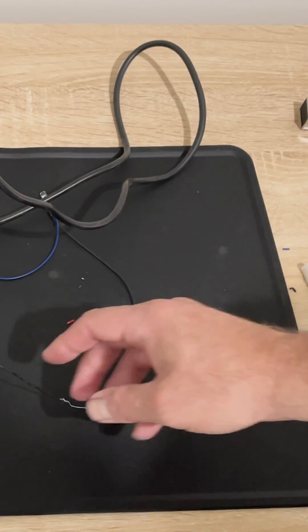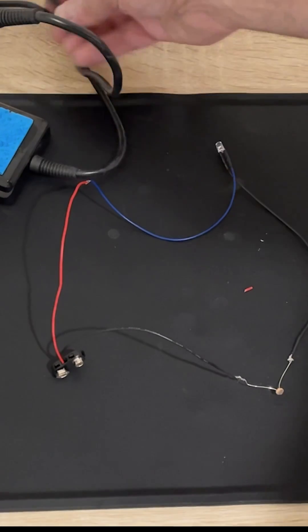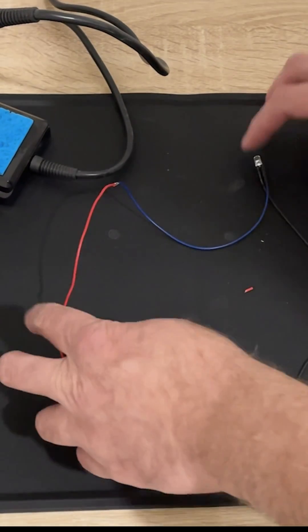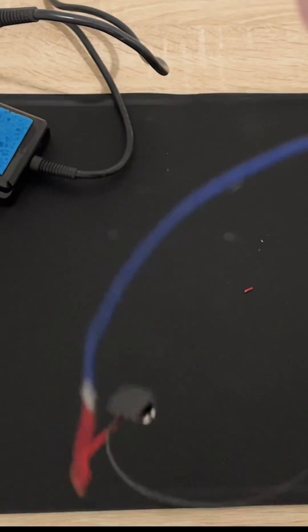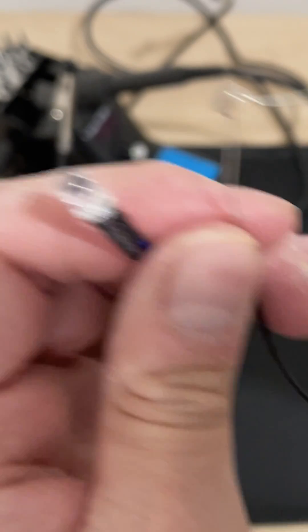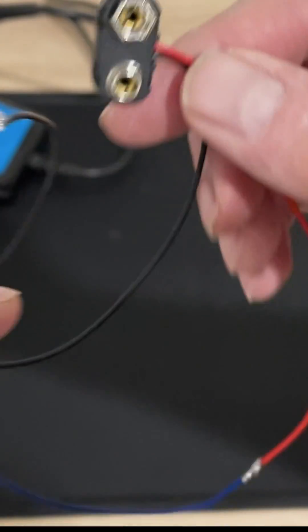Now we have everything wired. So we have our LED which is connected to our photo resistor, which is connected to our battery.